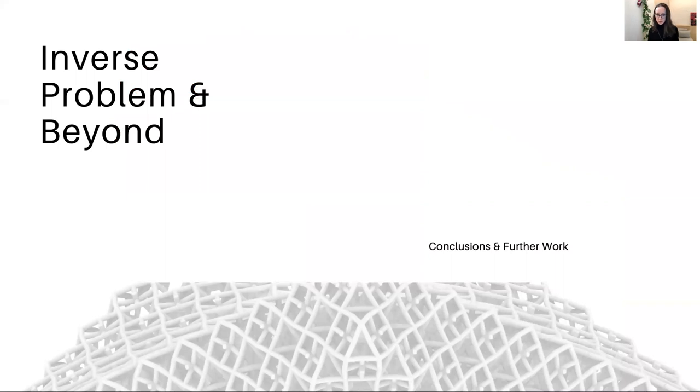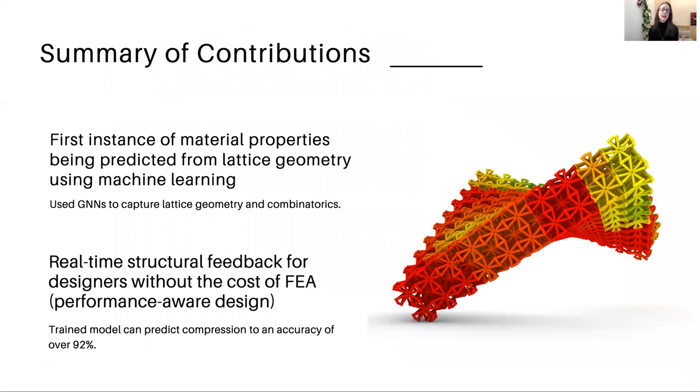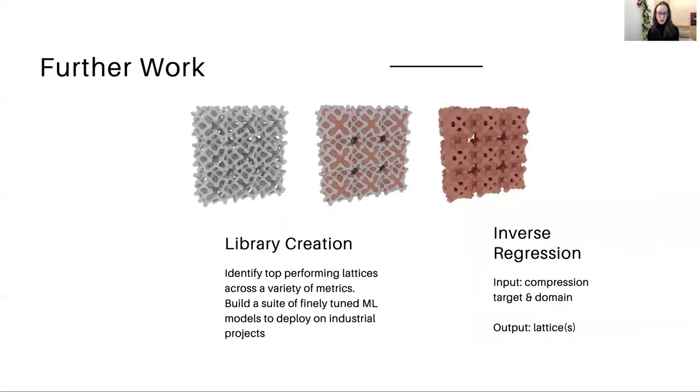To summarize and propose some directions for future work, this, to our knowledge, is the first instance of material properties being predicted from lattice geometry using machine learning. We applied a graph neural network to capture the lattice geometry and topology, and the trained model can predict compression to an accuracy of over 92%. This has the potential to offer real-time structural feedback for designers without the cost of finite element analysis, which is this idea of performance-aware design. I also want to mention that this would greatly outperform any kind of lookup or interpolation approach, which would require vastly more data points for similar quality results. In terms of further work, in addition to the things I've already mentioned, we're interested in creating a library of high-performing lattices across a variety of metrics, and building a suite of these tuned machine learning models that we can then use on projects. And this family of lattices could tile together to obtain different material properties, either at a small scale or at a larger, more architectural scale.